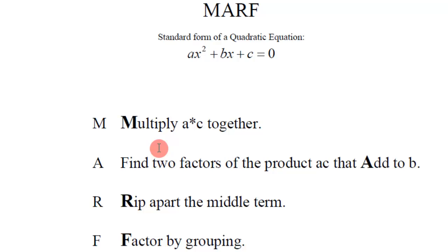Once you have that product, you're supposed to find two factors of that product AC that actually add up to B. So you do the multiplication first, then you look at its factors, and then you find factors that add up to B.